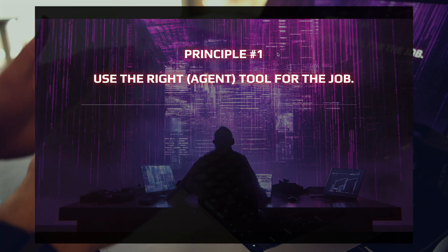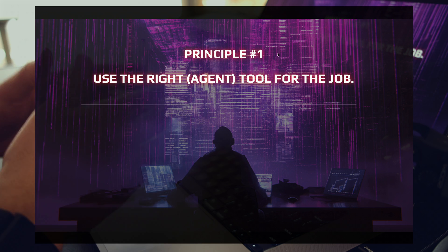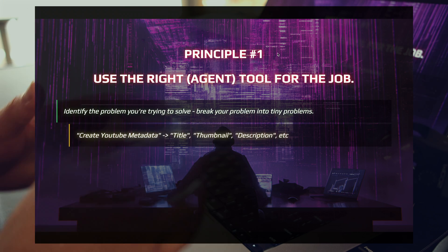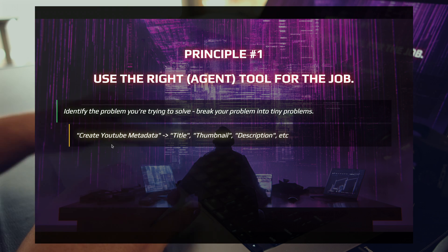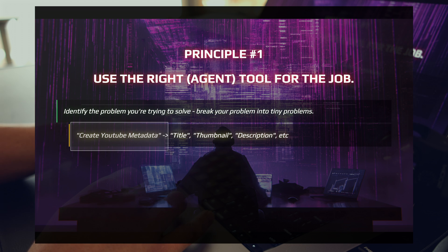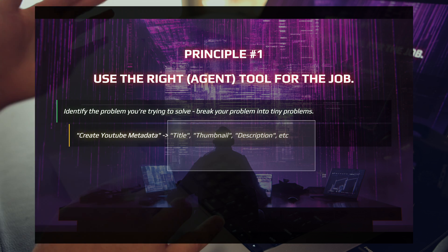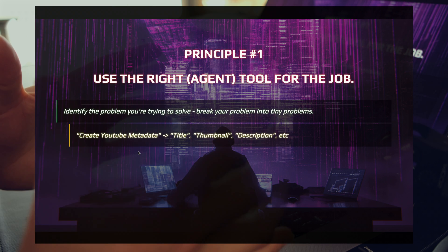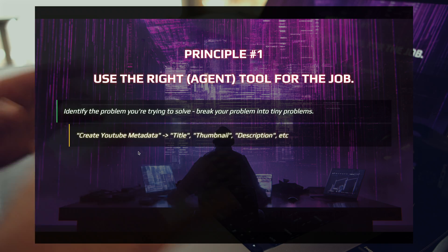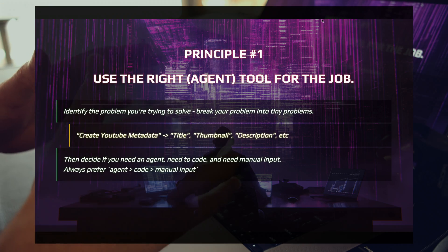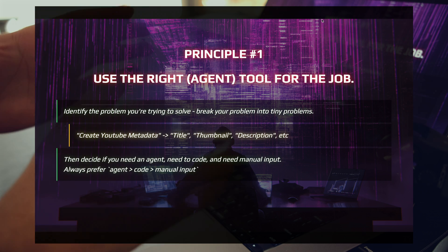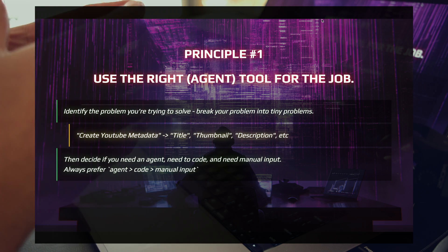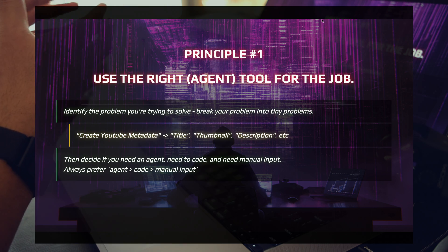Principle one: use the right tool for the job — in this case, use the right agent for the job. Identify the problem you're trying to solve and break your problem into tiny problems. In the example of our metadata generator, we have this top-level problem of creating YouTube metadata, and there are actually several steps: generation of the title, the thumbnail, the description. Break those down into tiny steps. It's not a big problem — it's three or four or five small ones. Then decide if you need an agent, if you need to code, or if you need manual input. Always start from the top: if you can use an agent, use an agent; if you need to code, write the code; if you need manual input, do it manually. You want to be automating as much as you can.